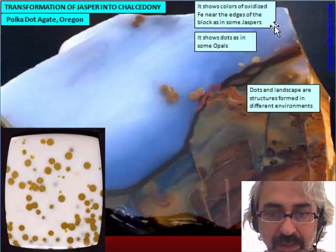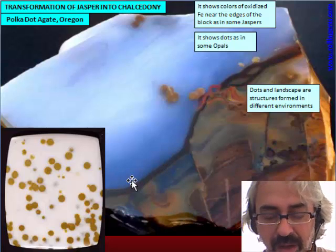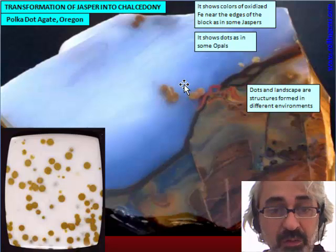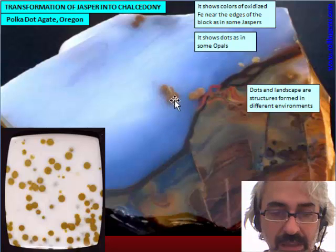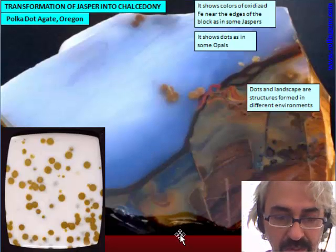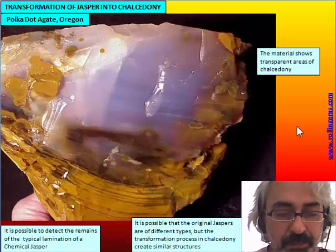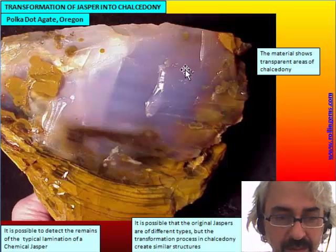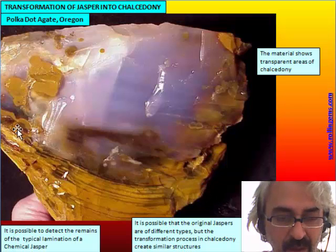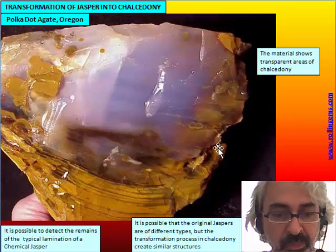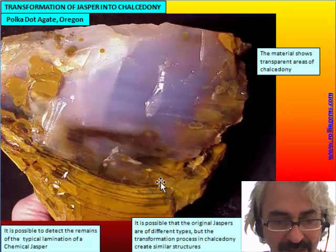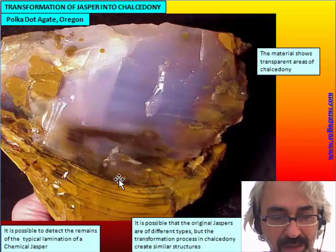Analyzing this material, we can see that the landscape pattern is typical of some kind of Jasper — in this case it resembles a stratified Jasper. But there is another structure, the dot, that is more typical of Opals, which can show a similar inclusion. So dots and landscape are structures formed in different environments. This sample shows a translucent portion, while the more opaque base shows the typical lamination of chemical Jasper — curved bottomward due to decreasing volume by loss of water — which is typical of chemical Jasper.